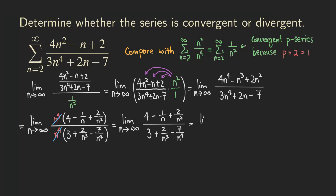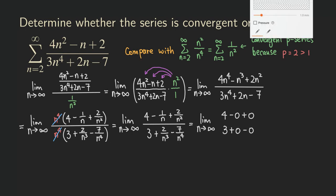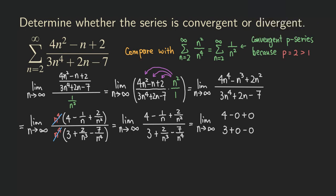So we have the limit equal to four minus zero plus zero, all over three plus zero minus zero. So the answer is four over three.